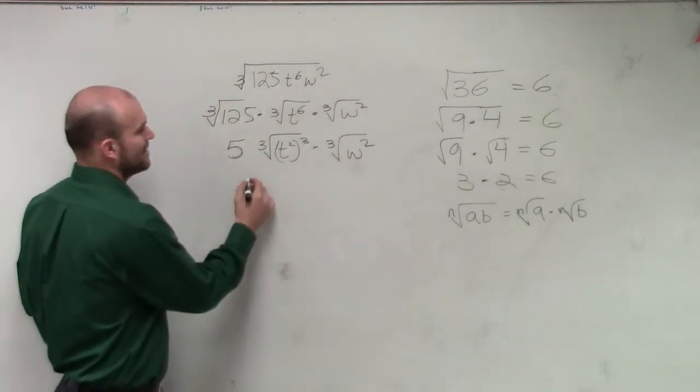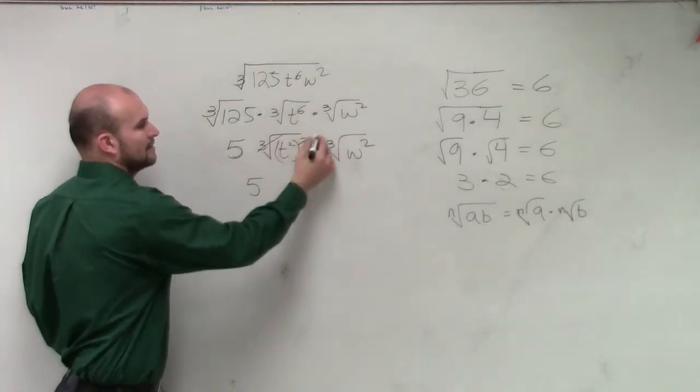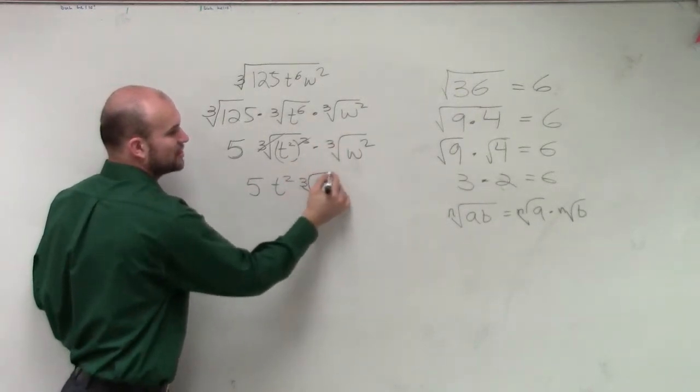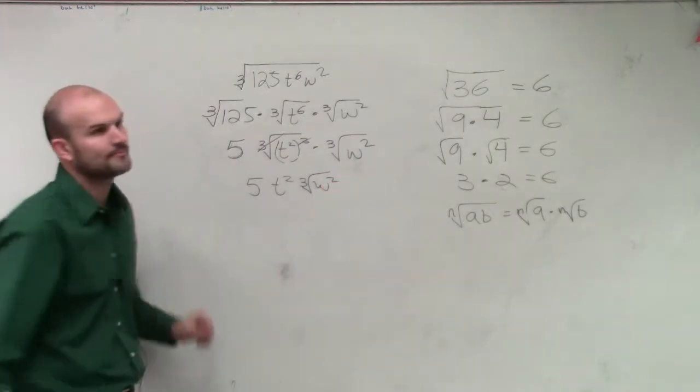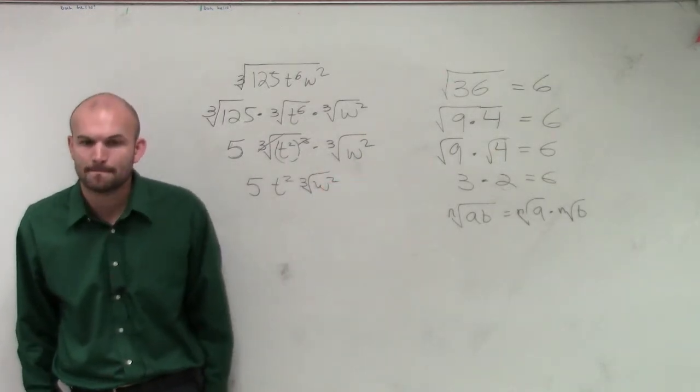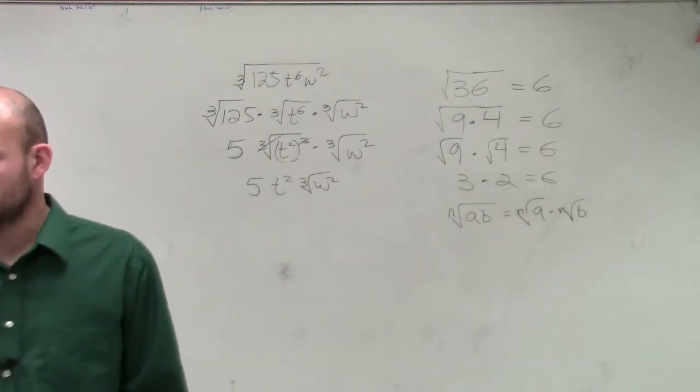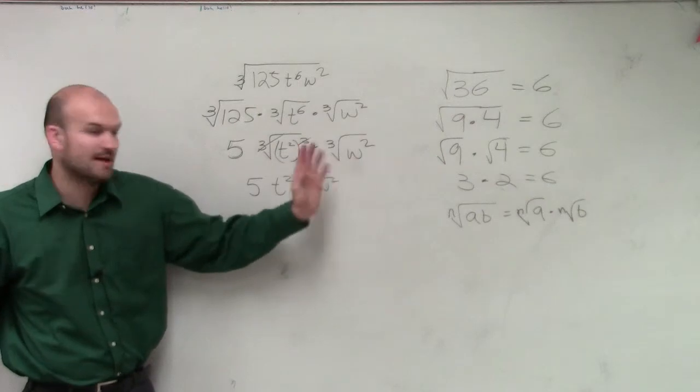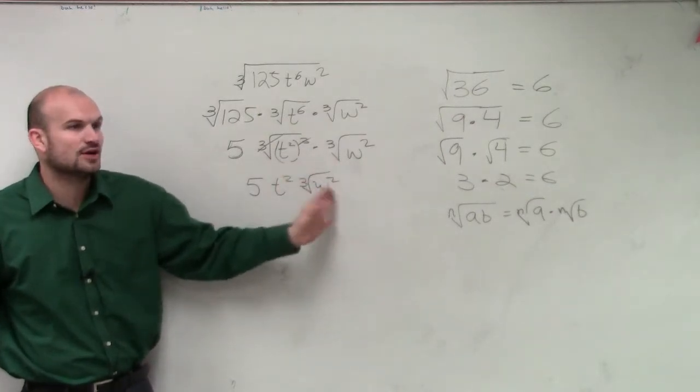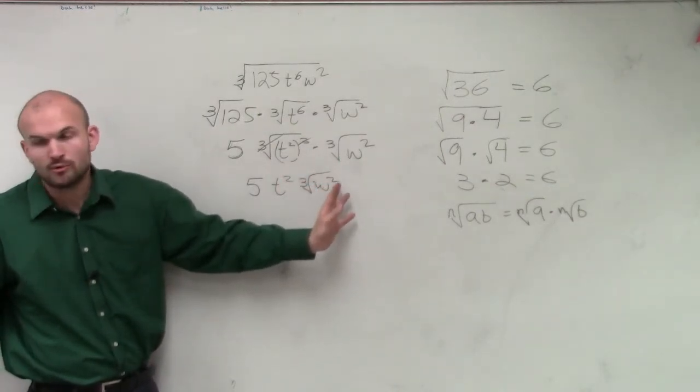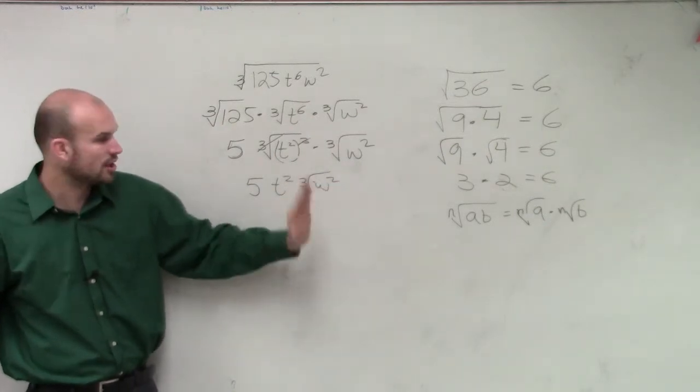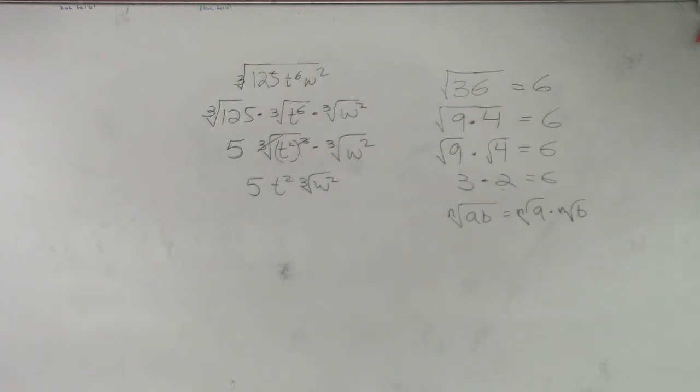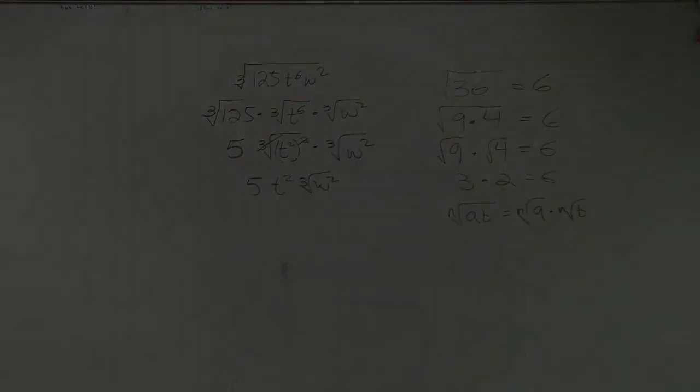So therefore I have 5t squared, and since I cannot simplify this further, it's going to be the cube root of w squared. And that's my final answer. What about the 3 besides the w? That's the cube root of w squared. That means what value times itself three times gives you w squared. Well, we don't have an even value for that, so we're just going to leave it in that simplified form.